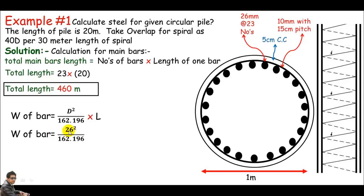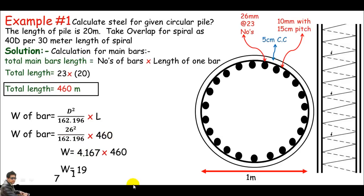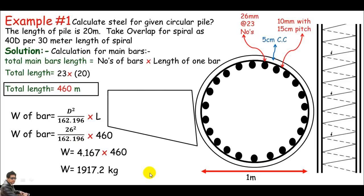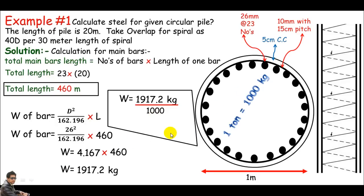The diameter of the bar is 26 mm, so it's 26² / 162.196, which gives 4.167 kg/m. Multiply by the total length of 460 m: the weight equals 1,917.2 kg. To convert to tons, divide by 1,000 — since 1 ton equals 1,000 kg — giving a weight of 1.917 tons. This completes the first approach for main bars.